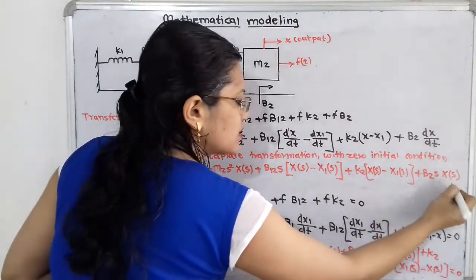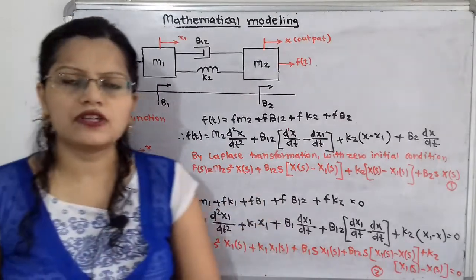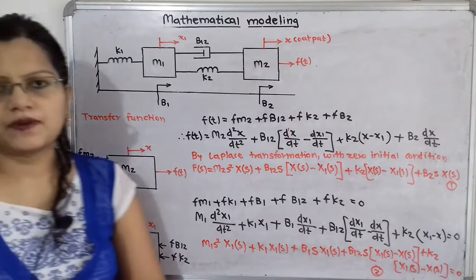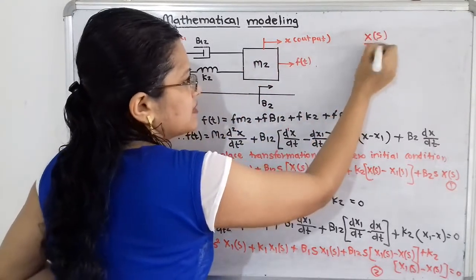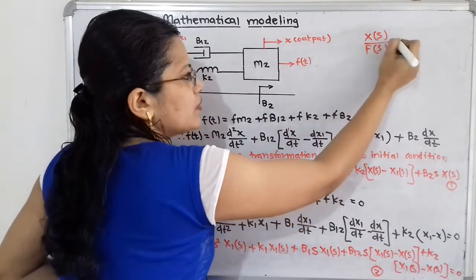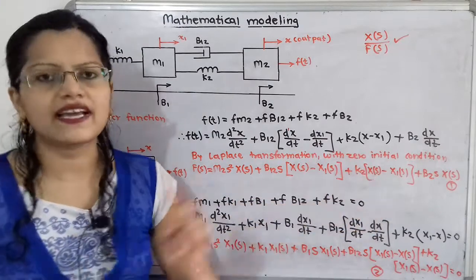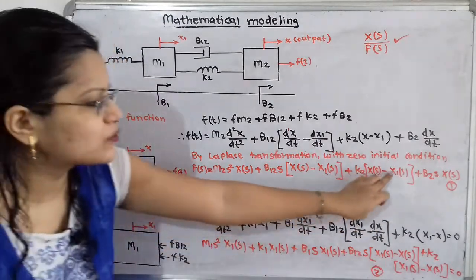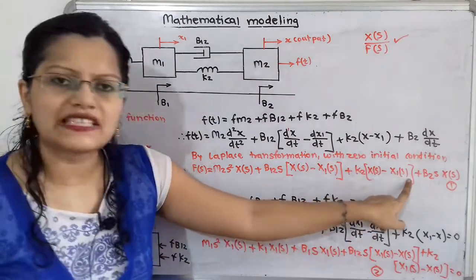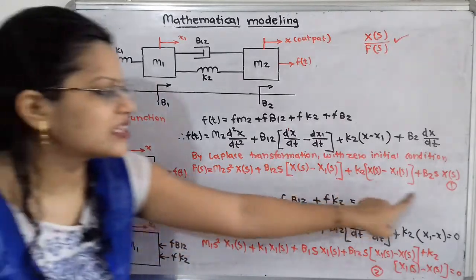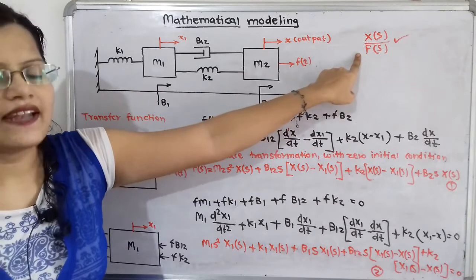This gives us two Laplace transformation equations. The transfer function is X(S)/F(S) — ratio of output to input. Both equations are in terms of X1(S) and X(S), so we must eliminate X1(S) by expressing it in terms of X(S), substitute back into the first equation, and then take the ratio X(S)/F(S).